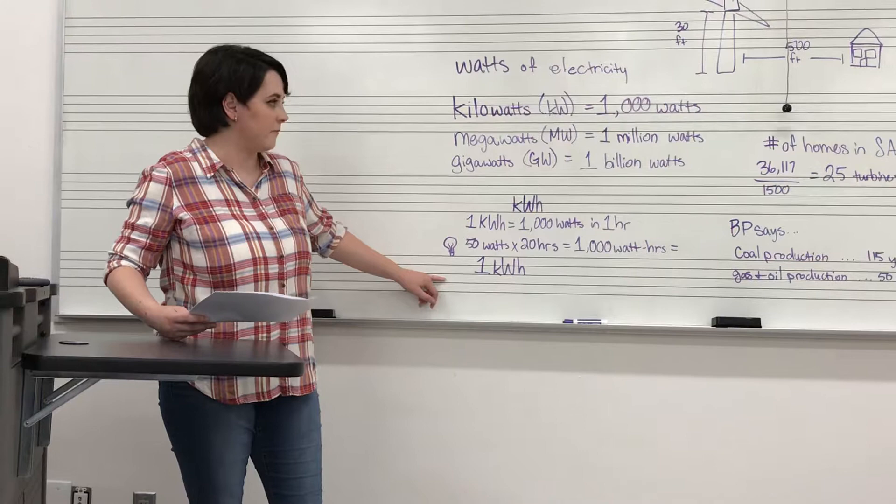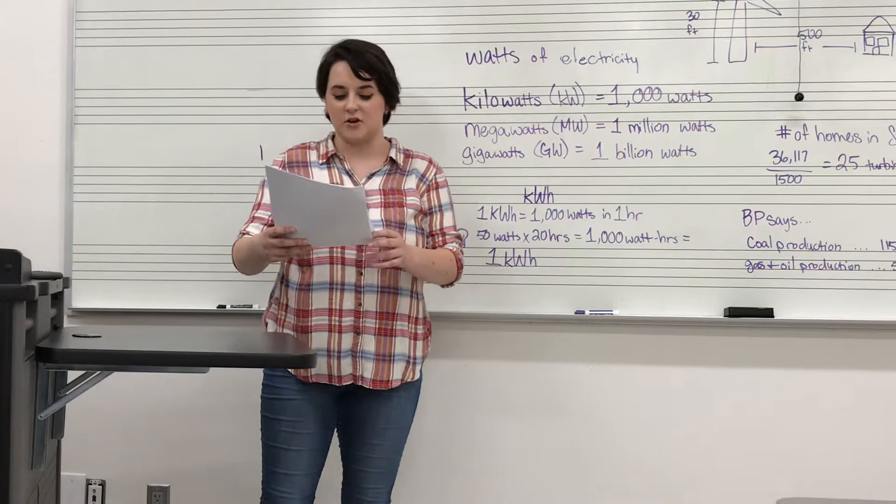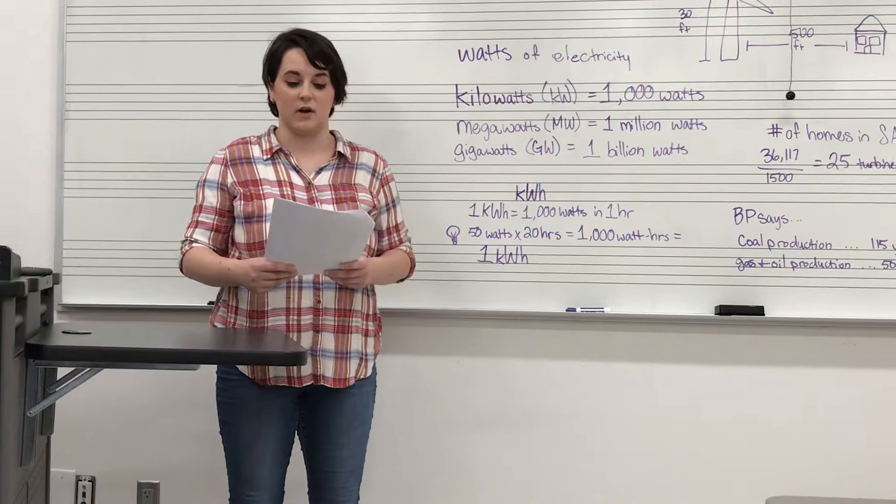Wind turbines can come in different sizes and production capacities. The bigger the turbine, the more wind, the more energy it can produce. According to the European Wind Energy Association, an average onshore wind turbine with a capacity of 2.5 to 3 megawatts can produce more than 6 million kilowatt hours in one year, enough to supply 1,500 average European homes with electricity.